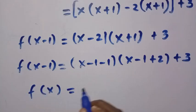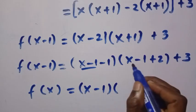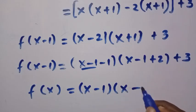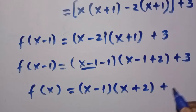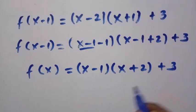So changing that, we have f of x equals, this is x minus 1, we change it to x minus 1 only. Then also this is x minus 1, we change it to x plus 2, and here is plus 3.